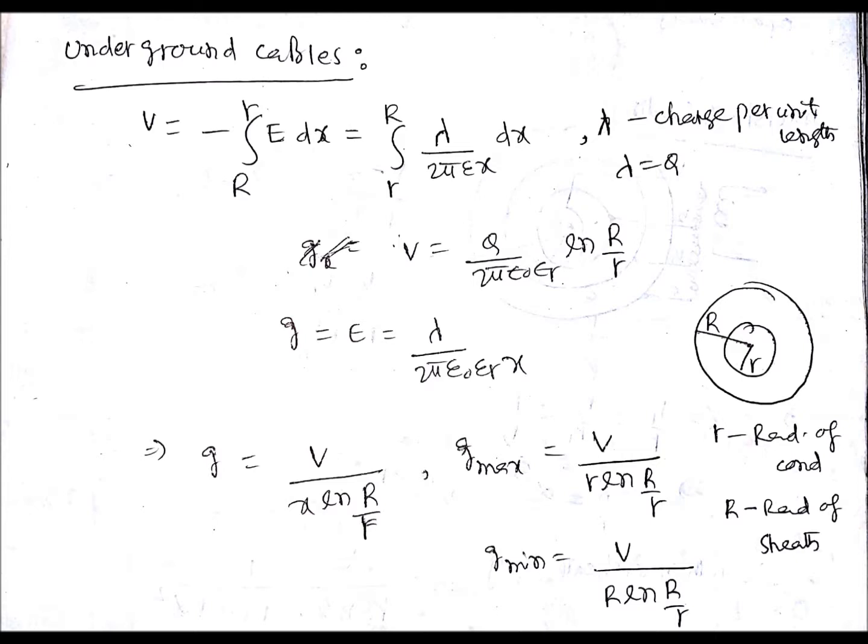E is λ/(2πε₀εᵣx), where λ is charge per unit length, not just charge. Q is per unit length, which is why you're not getting x² in the denominator. We've already considered per unit length charge.